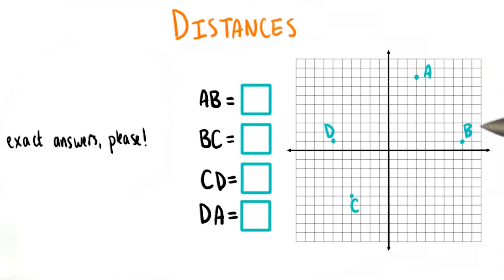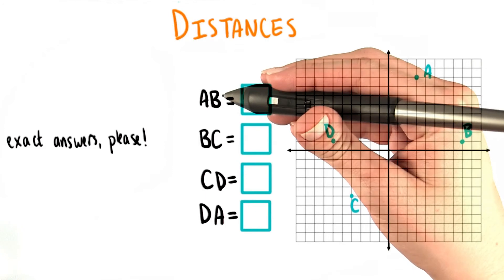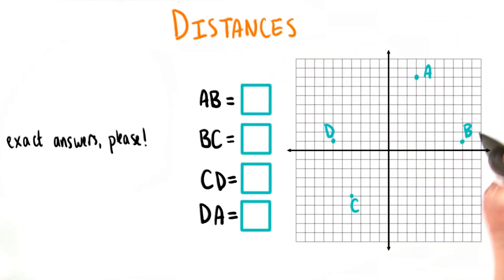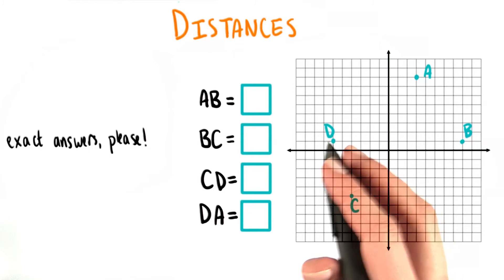Can you do something similar to find the distances between these points on this graph? To make your life easier, I only want you to find the distance from a to b, from b to c, from c to d, and from d to a.